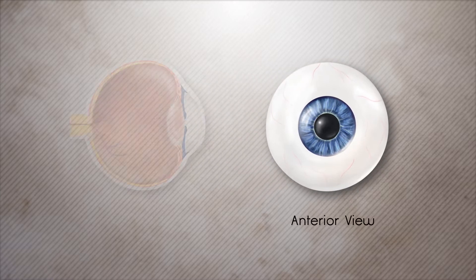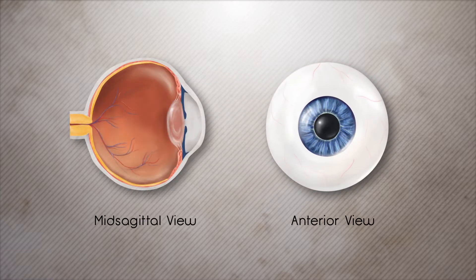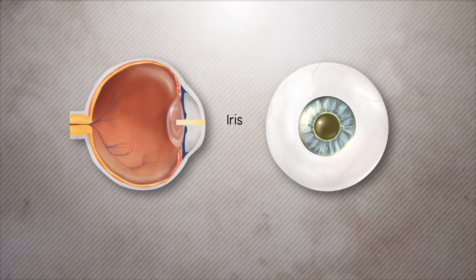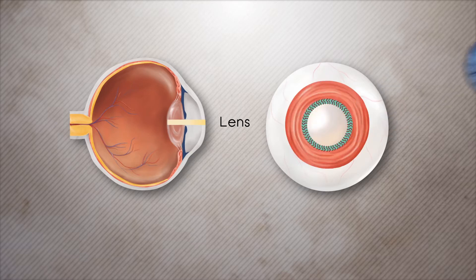The eye perceives light rays when reflected off of an object. The light first passes through the cornea, the transparent front part of the eye, then the pupil which is located in the center of the iris. Light continues to pass through the lens and focuses on the retina located at the back of the eye.